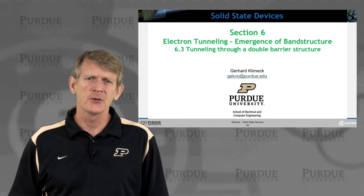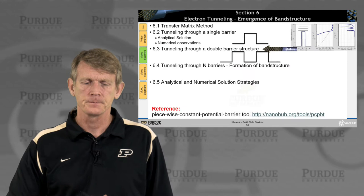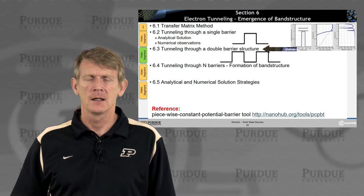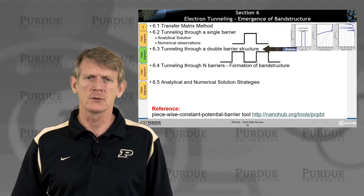Hello again. Now we're going to talk about tunneling through a double barrier structure, and we'll do this in the context of the emergence of band structure. I previously gave you some analytical solutions and numerical observations to tunneling in a single barrier. Now we'll put this together in a slightly more complicated structure.